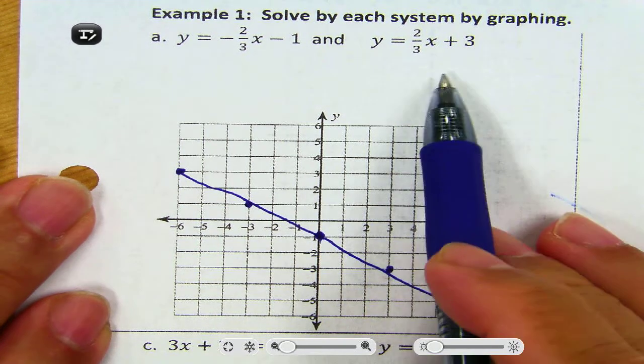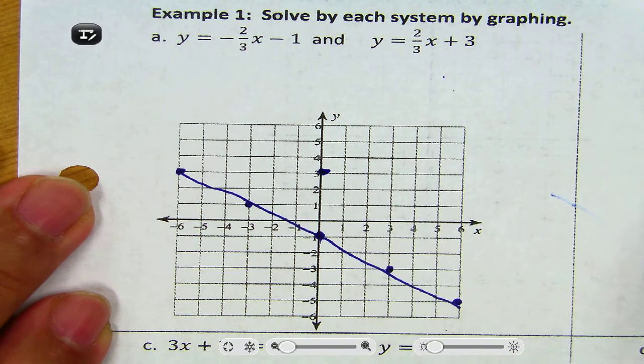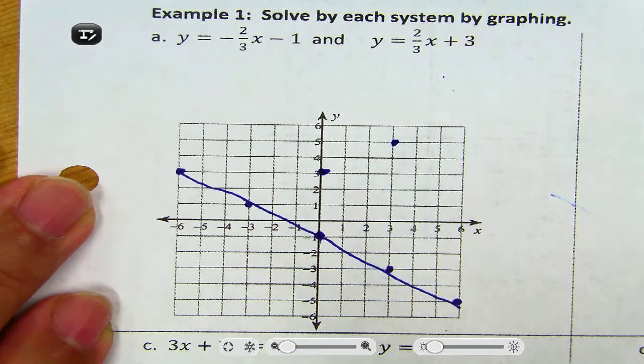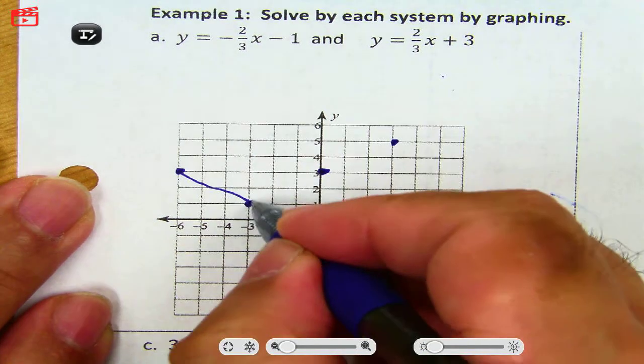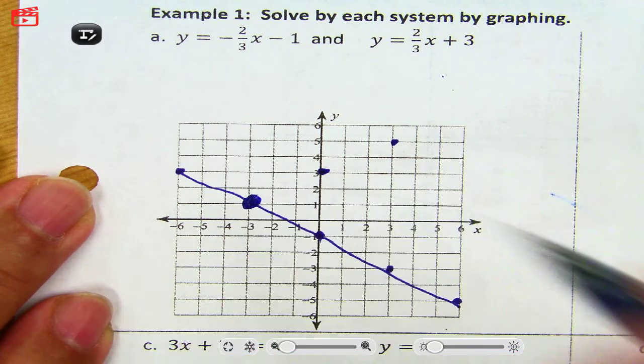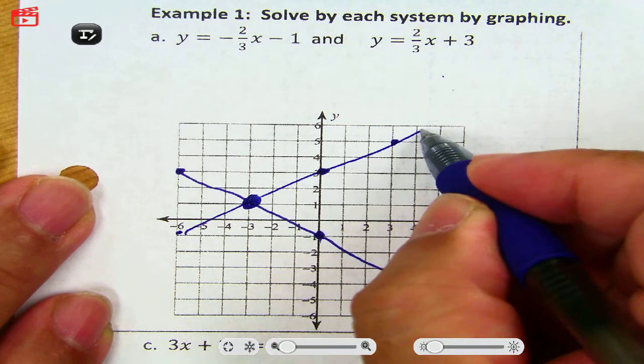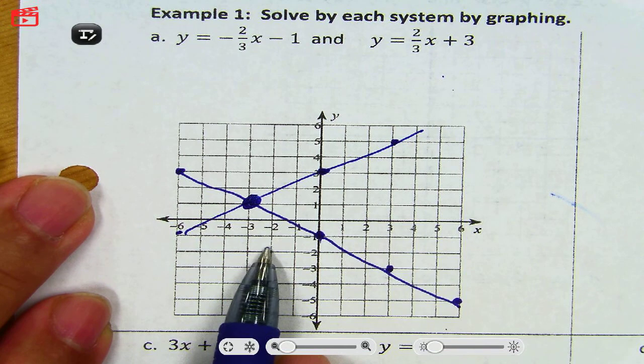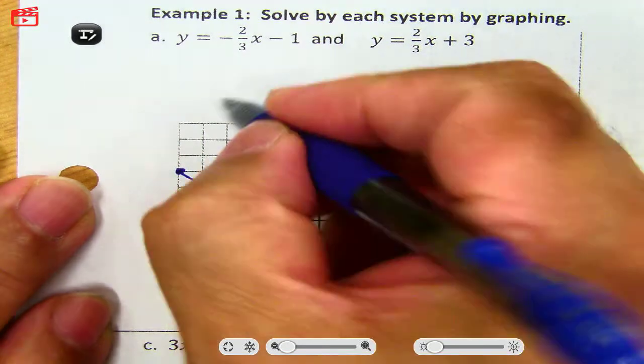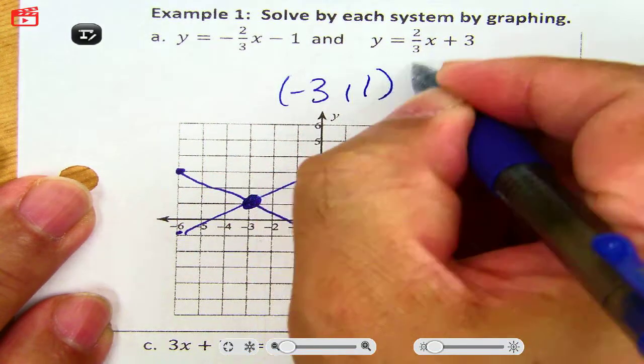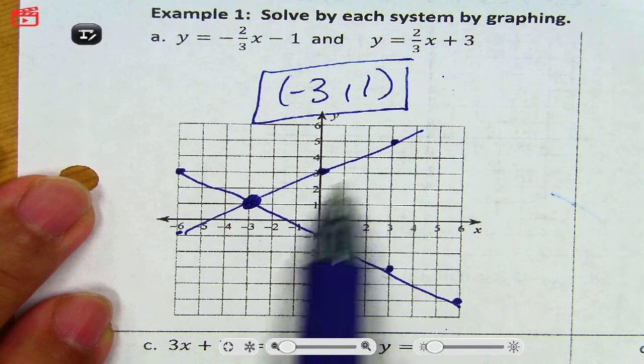Alright, we're going to repeat the process with the second equation. We have a y intercept at 3. We're going to go up 2 right 3. And go backwards. We're going to go down 2 and left 3. Now look what we have here. We have an overlapping point. So I'm going to darken that very big. Because that's going to be our intersection. So that intersection is our solution. What's the coordinates of that intersection? Negative 3 positive 1. So the answer is negative 3, 1. That's the answer I'm looking for. The work to get that answer is this graph.